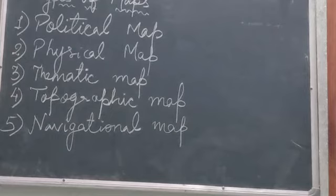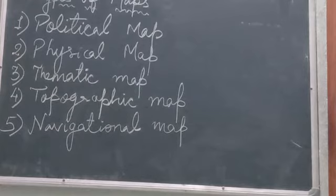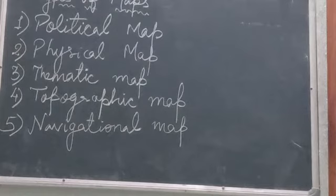A topographic map tells us the detailed picture of a particular area — where temples, hospitals, and various facilities are situated. It also tells us about the representation of natural and man-made features like local landforms, water bodies, roads, railway tracks etc. It is also known as a contour map.